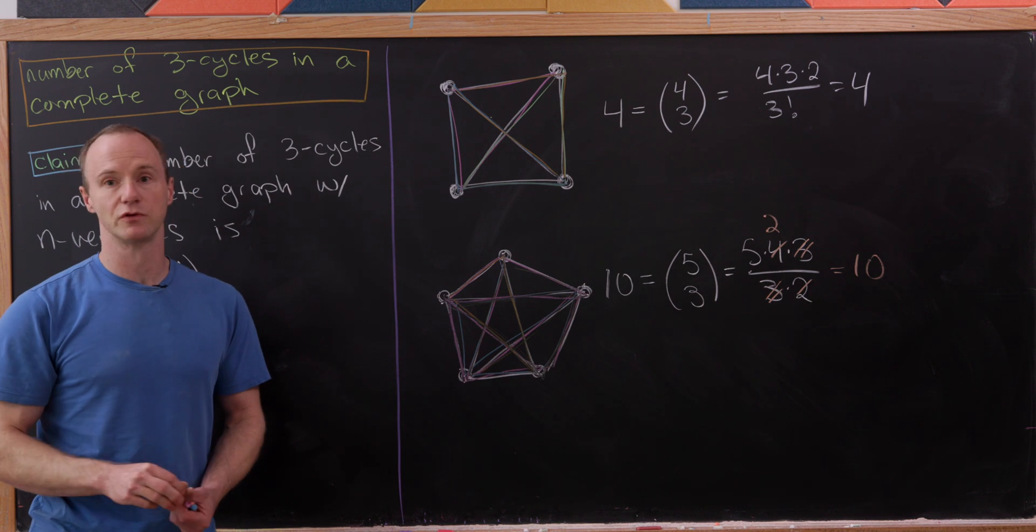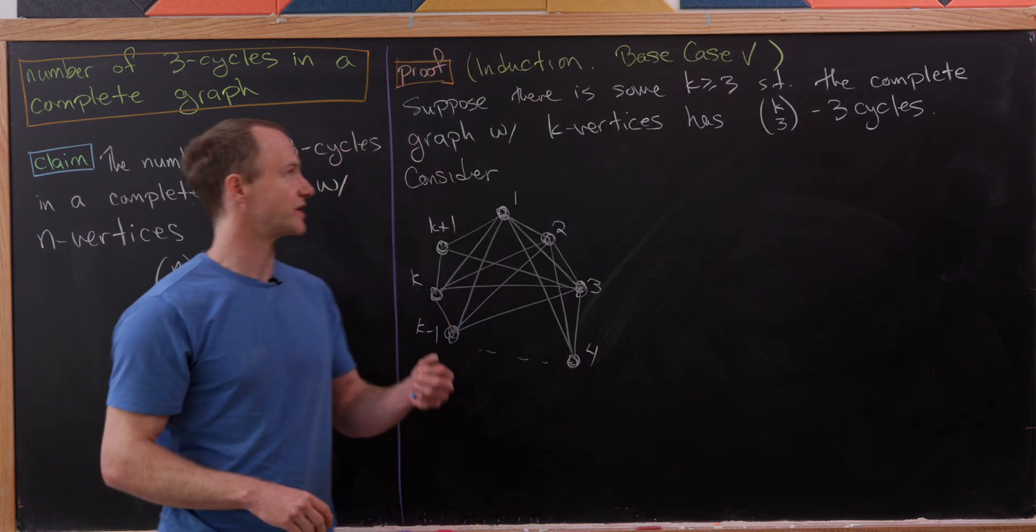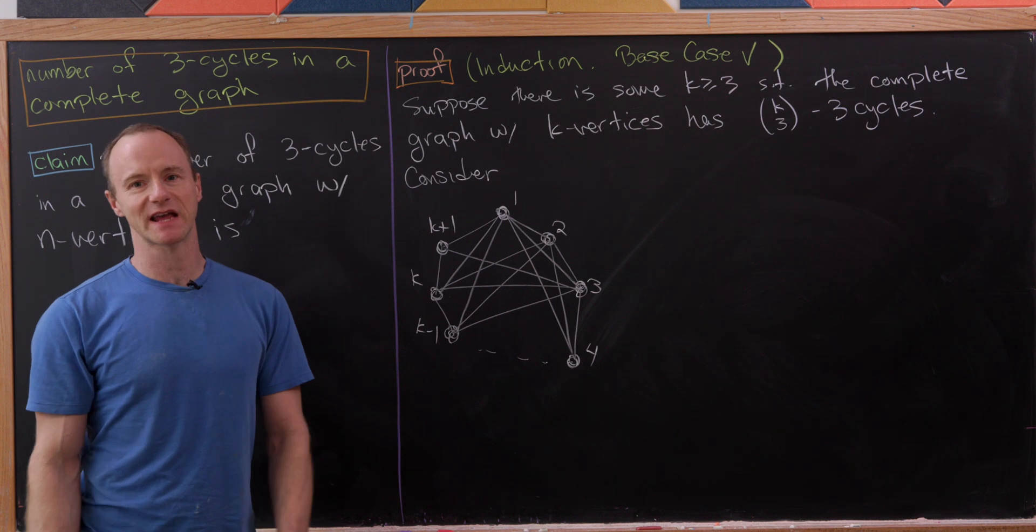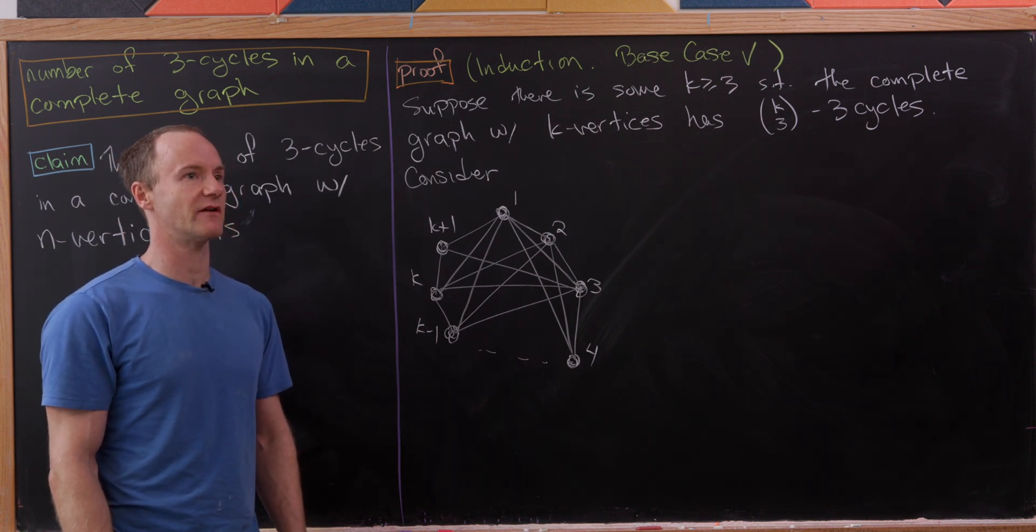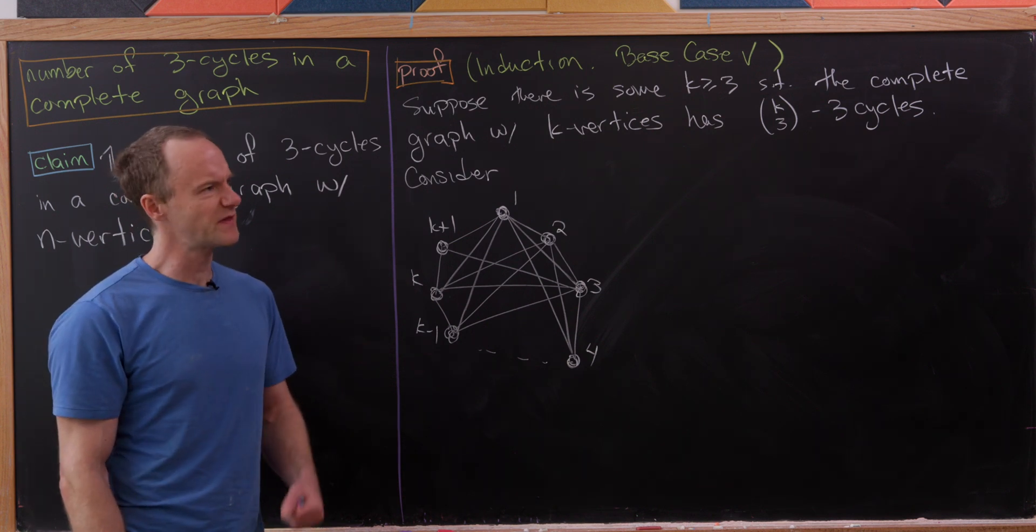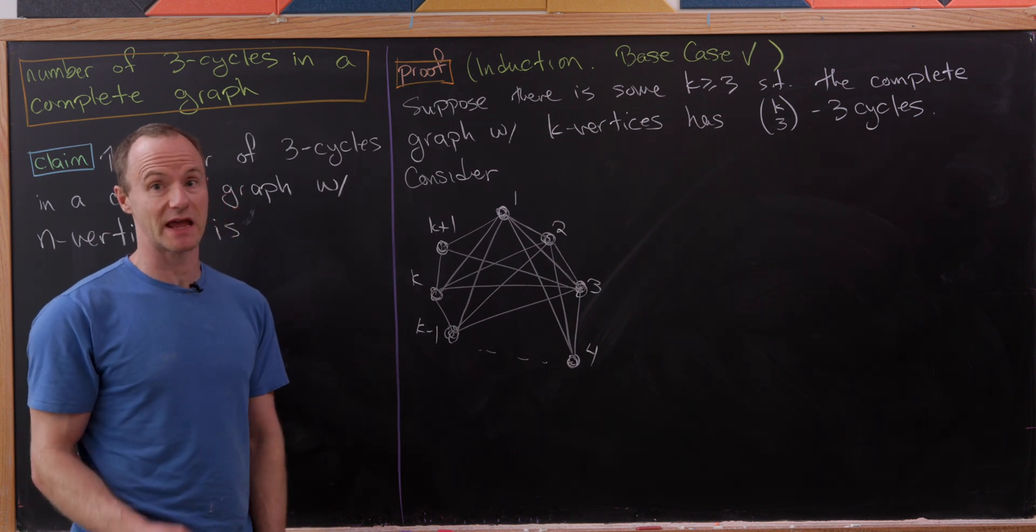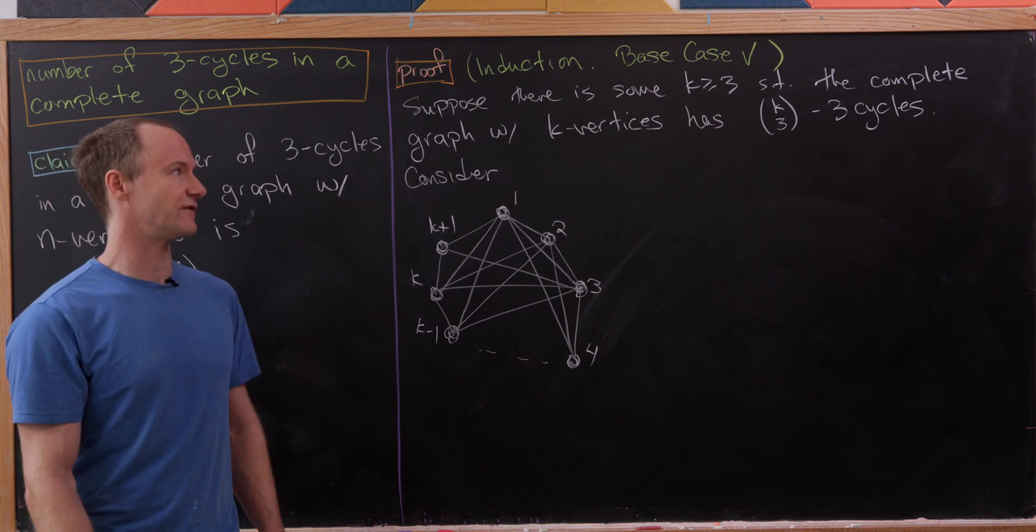Let's see how we can prove this in general. We'll prove this claim by induction. Observe that the base case is already done. The base case is when you have three vertices, and clearly there's only one three cycle there. But we also checked it by hand for the n=4 and n=5 cases.